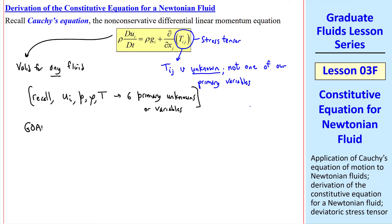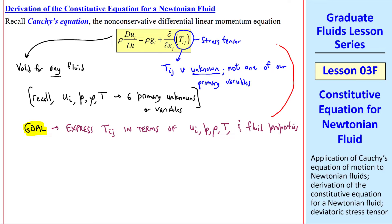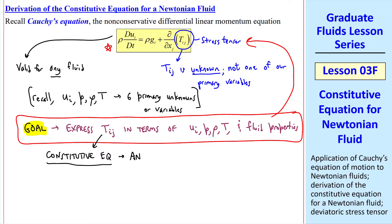Therefore, our goal is to express the stress tensor in terms of these six primary unknowns and fluid properties like viscosity. If we can accomplish that, then Cauchy's equation will become much more usable. This leads us to what we call the constitutive equation, which we'll define as any equation that expresses Tij as a function of the primary unknowns and fluid properties.